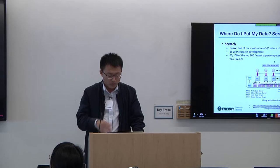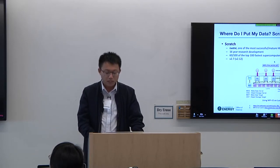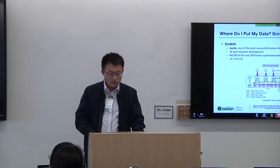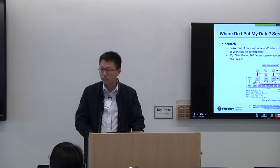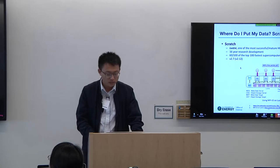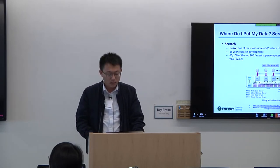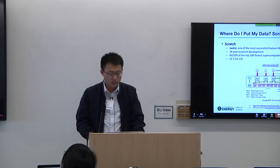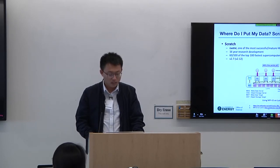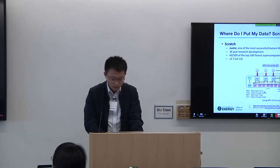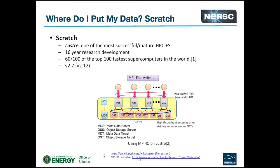If you look at the top 500 HPC list — the fastest supercomputers in the world — you will find that most of them are using Lustre as their file system. The current version at NERSC is 2.7, while the latest version is 2.12, which has more features. We expect an upgrade with the next machine.